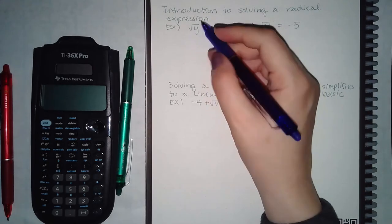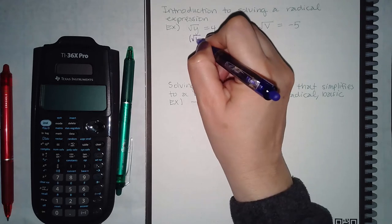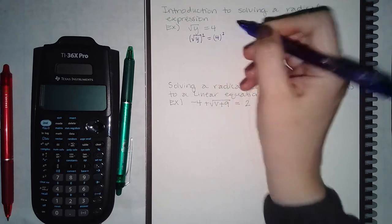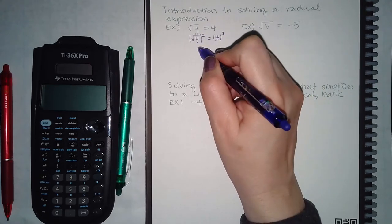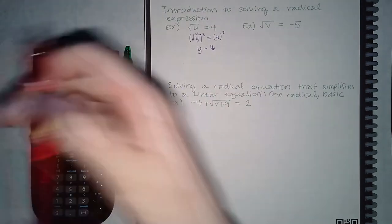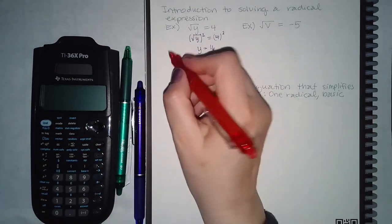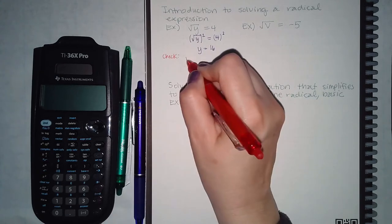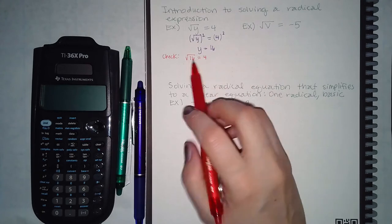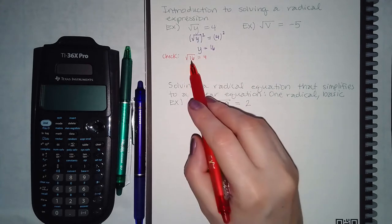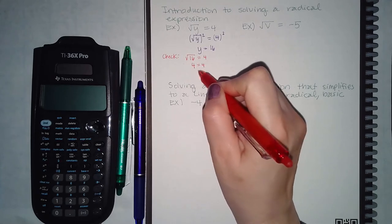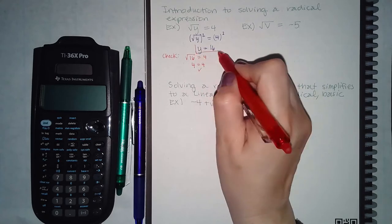If I want to get rid of a square root, I would apply the square exponent, but whatever I do to one side I have to do to the other. So here those would cancel each other out, and 4 squared is 16. Now to check my answer, I would plug in 16 for y and see if that equals 4. They've given me a positive square root, so when I take the square root of 16, I get positive 4, and these are equivalent, which means this is my answer.